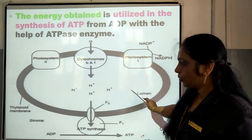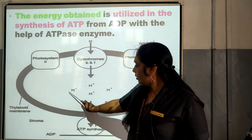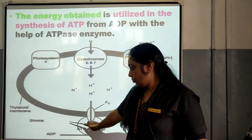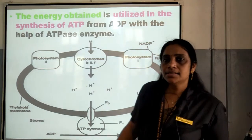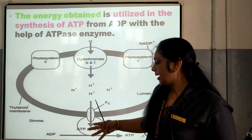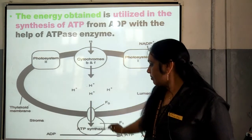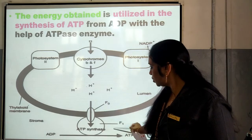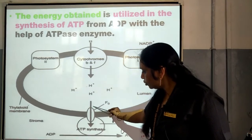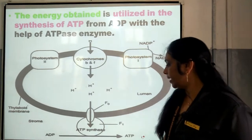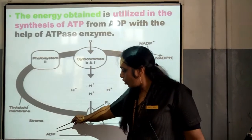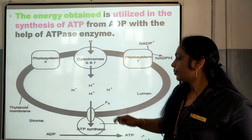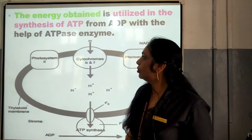This is the thylakoid membrane, and this is the lumen, and this is the stroma. In the thylakoid lumen, you can see the amount of protons present is more compared to the amount of protons in the stroma. Because of this proton gradient, the ATPase enzyme is present there, which helps for the transportation of the proton from the lumen to the stroma. When the proton passes through this ATPase enzyme, ATP synthesis is taking place from ADP to ATP. This is how ATP is synthesized in the chloroplast during the process of photosynthesis.